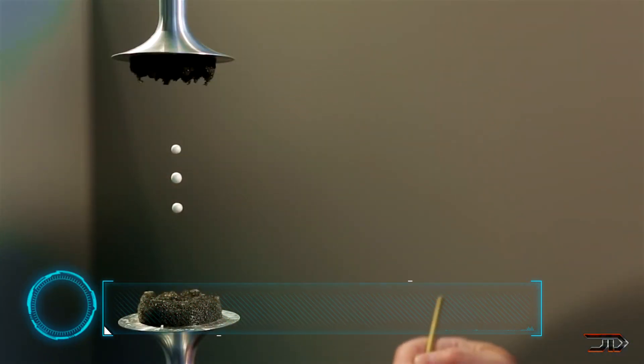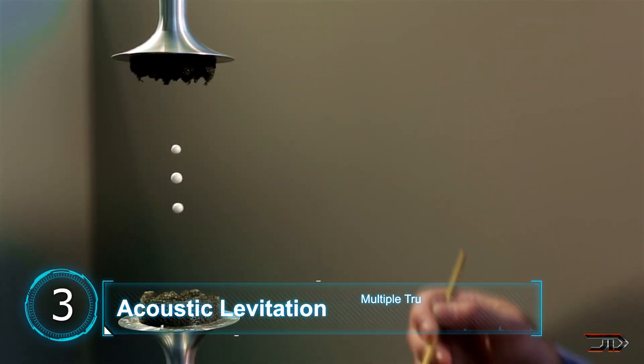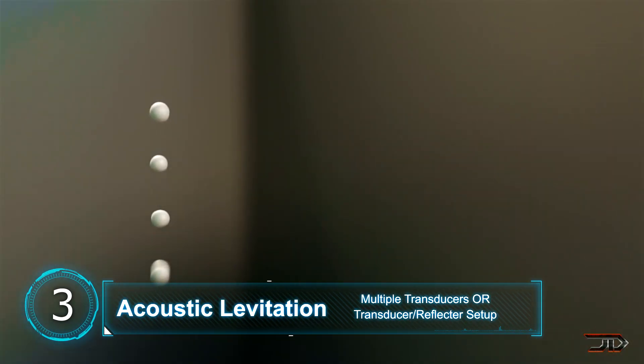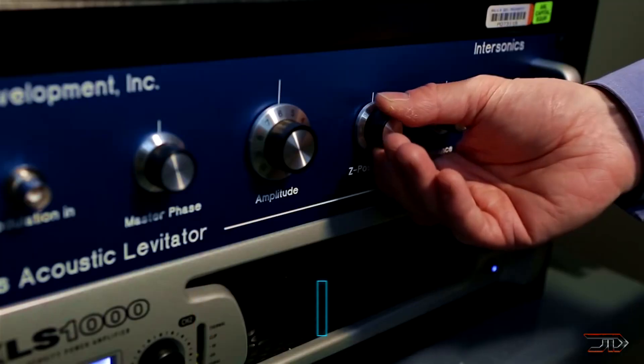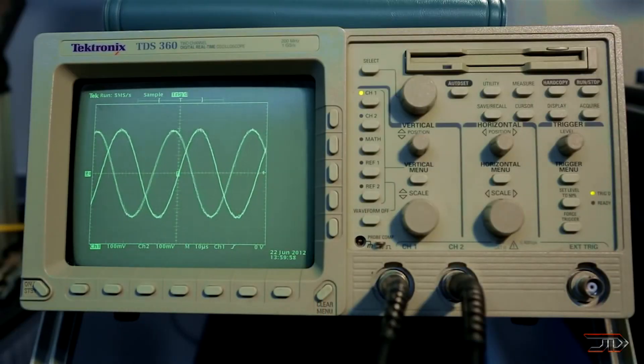At number three, acoustic levitation. Once again this method can work on almost anything including liquids. It works by using opposing beams of sound waves which create standing waves. These standing waves can then levitate an object in mid-air.